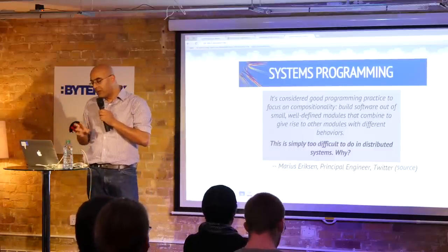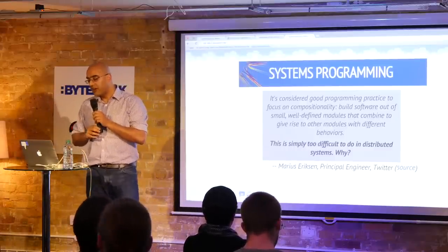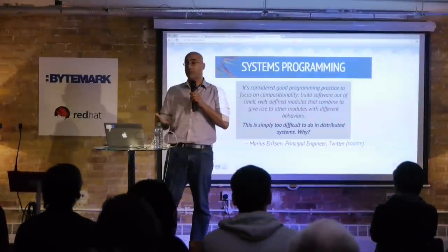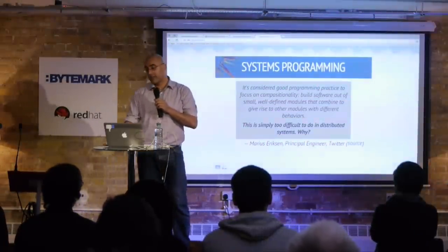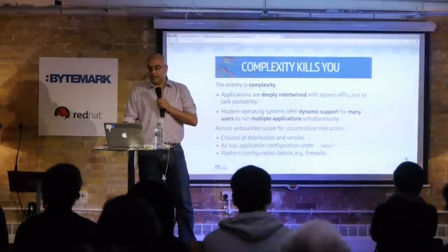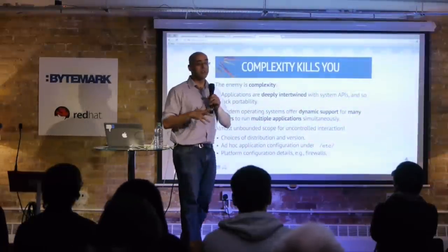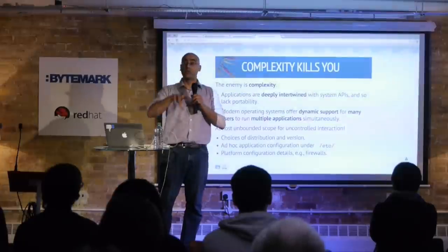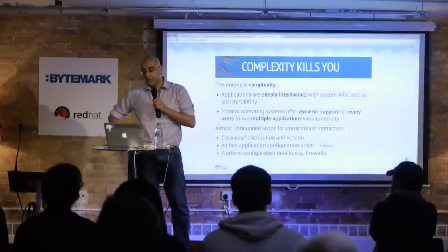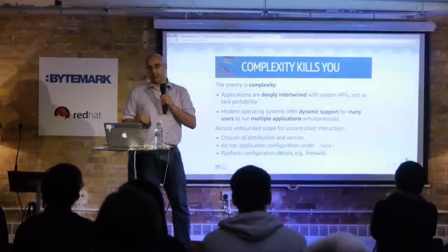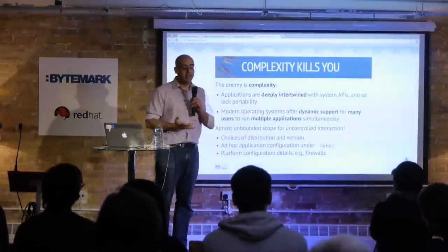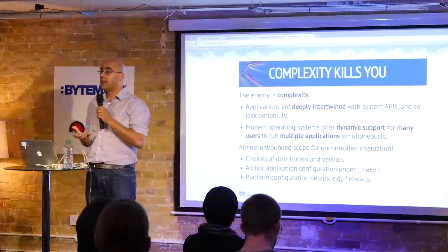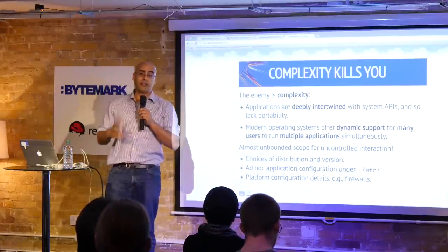The first thing that leapt out at me is that a few years ago, Marius Eriksson from Twitter observed that it's really hard to build composable services. We've heard this a lot during the talks today. The enemy really is complexity. We've built up these layers and layers of software stacks, and applications have become intertwined as the years have gone by — they essentially lack portability. You could use POSIX in the past, or Windows, but even these days POSIX is not a viable alternative for building high-performance applications.